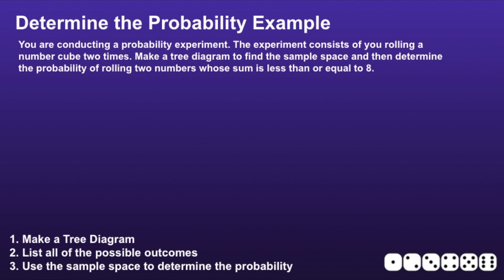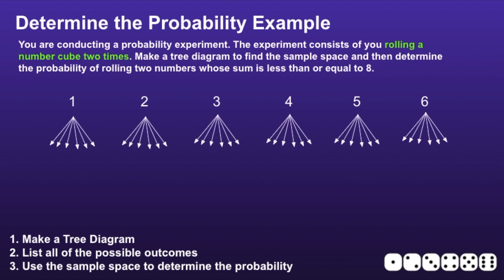Step one is to make a tree diagram. There are two events, but they are the same — we are rolling a number cube two times. Starting with the first event, if I roll a number cube one time, there would be six possible outcomes: one, two, three, four, five, and six. Now for the second event, rolling that same number cube, from each of those numbers I'm going to draw six arrows, and at the bottom of those arrows I'll write all the outcomes of that second roll — the numbers one through six.